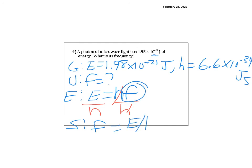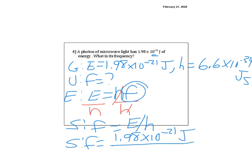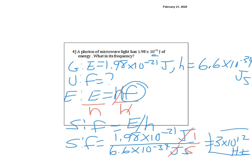Dividing both sides by H gives F equals E over H. Plugging in: F equals 1.98 times 10 to the negative 21st joules divided by 6.6 times 10 to the negative 34th joule-seconds. The joules cancel, leaving 1 over seconds, which is Hertz. In the calculator: 1.98 EE negative 21 divided by 6.6 EE negative 34. The answer is 3 times 10 to the 12th Hertz. That's it — the rest are on your own.